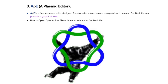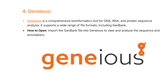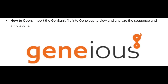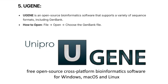Another well-known visualization tool is the Plasmid Editor (APE). The Plasmid Editor is a free sequence editor designed for plasmid construction and manipulation; it can read GenBank files and provide a graphical view. Go to File > Open and select your GenBank file. Another tool is Geneious — a comprehensive bioinformatics tool for DNA, RNA, and protein sequence analysis that supports a wide range of file formats including GenBank. Importing a GenBank file into Geneious allows you to view and analyze the sequence and its annotations.